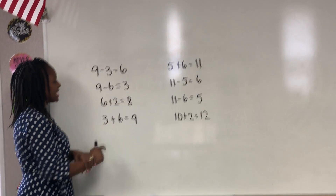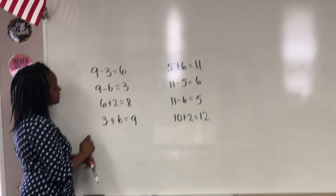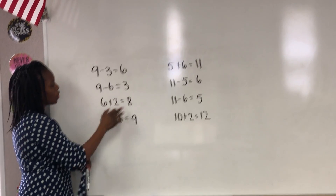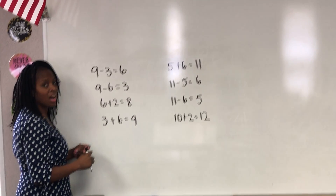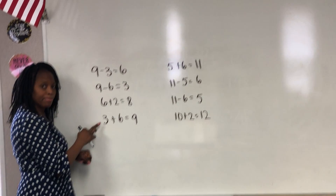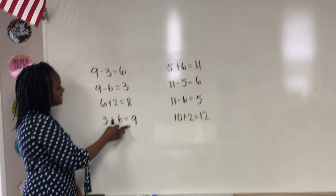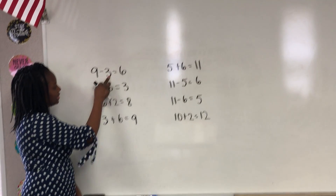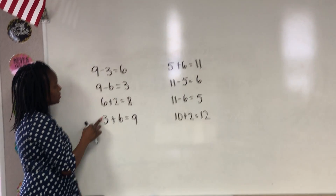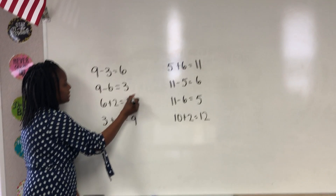Let's take a look at the next one. 6 plus 2 equals 8. There's a 6, but do you see a 2 in this problem? No. Do you also see an 8? No. So most likely this one does not match. Let's check the last one: 3 plus 6 equals 9. You have a 3, a 6, and a 9. So these three match and go together, but this one does not.